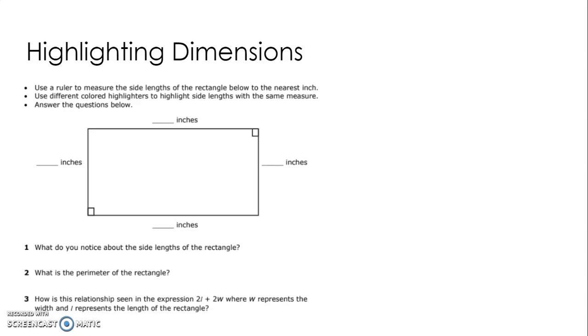So measure those to the nearest inch. That means don't put any half inches or quarter inches to the nearest inch. You're doing an estimation, basically. Look at where it falls closest to. And then so you're going to measure all the sides, put those in. And what did you notice about the side lengths of the rectangle?